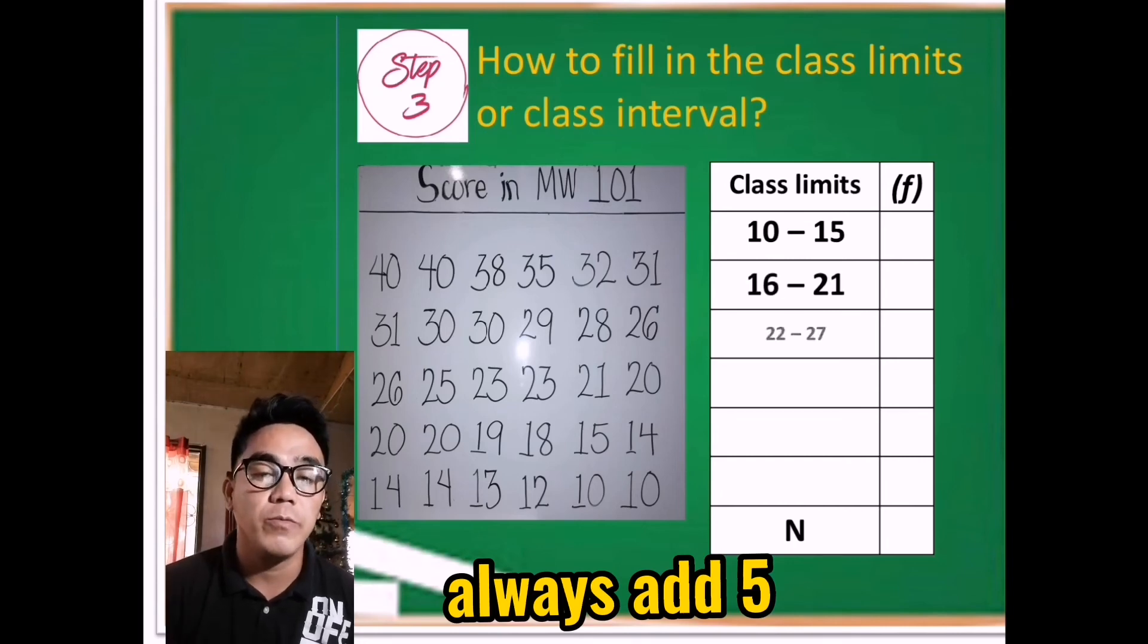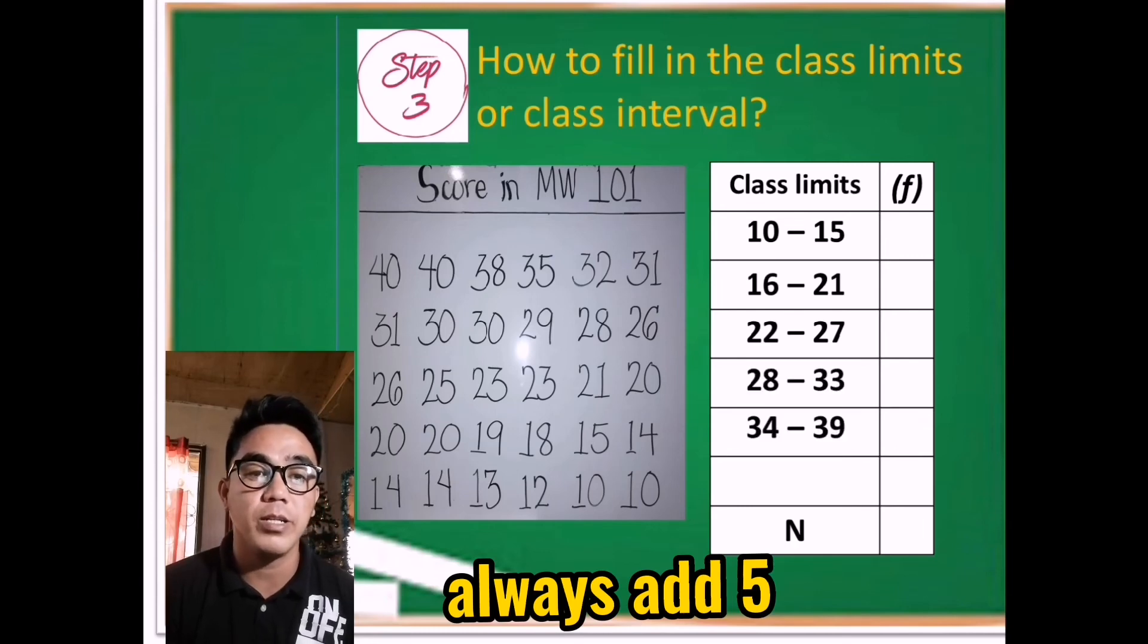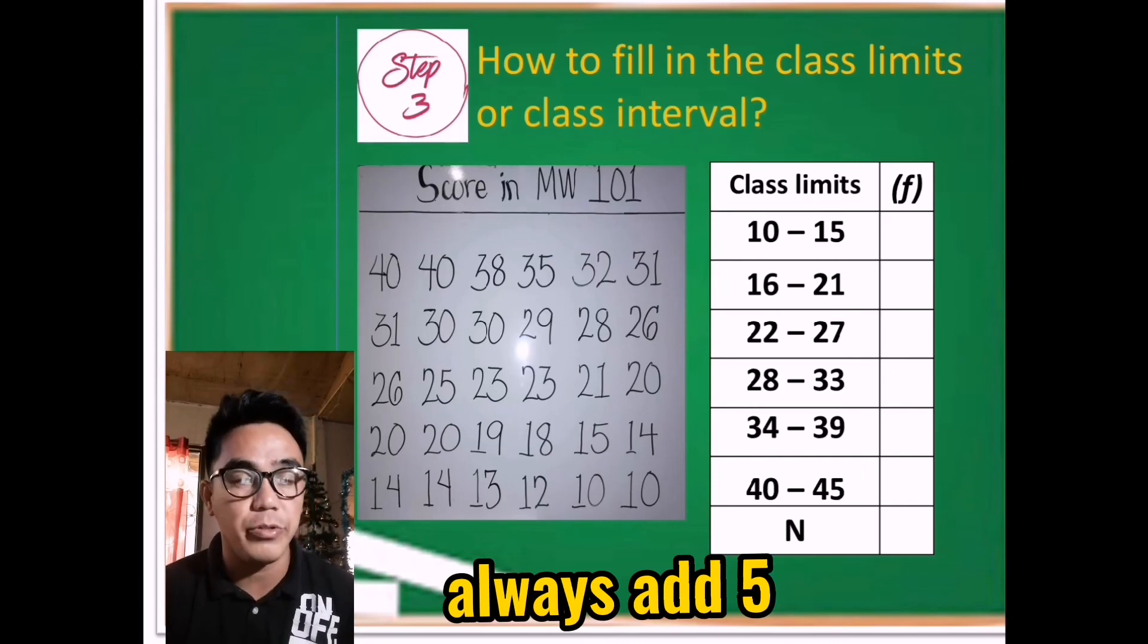Then after 21 is 22. So 22 plus 5, we have 27. 28 plus 5 is 33. 34 plus 5 is 39. Then since the highest value is 40, make sure that the class limit or class interval you made must include all the given raw scores, including the highest value, which is 40. So we have 40 to 45. So that is how we fill in the class limits or class interval.